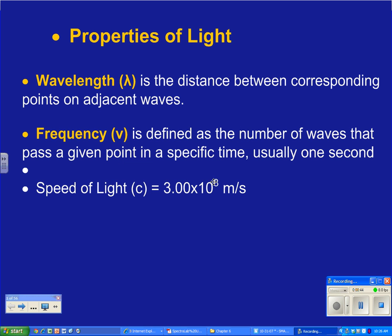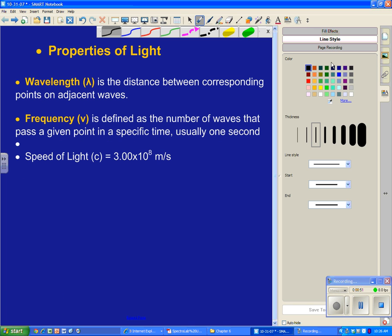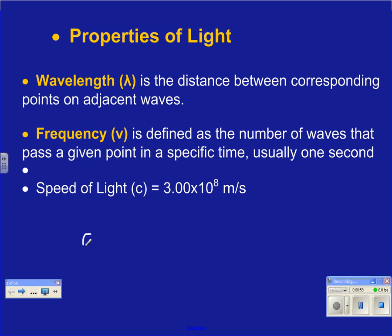So what you're going to be doing with those is, since C is equal to, let me see if I can write this up here, C is going to end up being equal to the wavelength times the frequency. So you'll know two of those, and then you're solving for one, so either the wavelength or the frequency. Given the wavelength, you can solve for frequency. Given the frequency, you can solve for the wavelength.